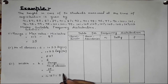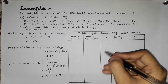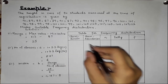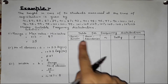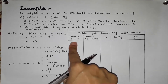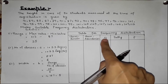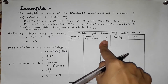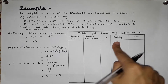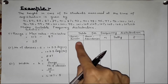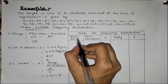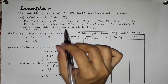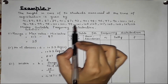Now we will solve our question. We have created a table for frequency distribution. The table has the following columns: class limits, class boundaries, xi midpoints, tally, and frequency f.